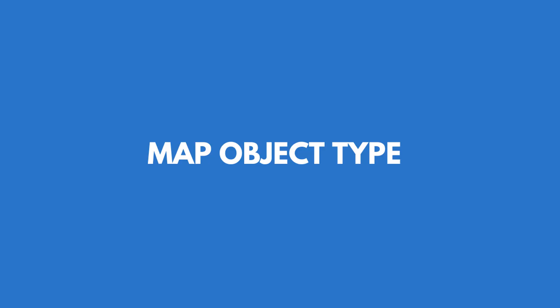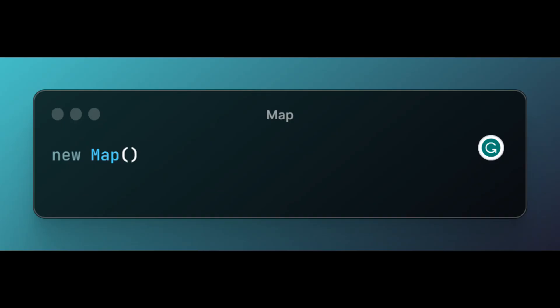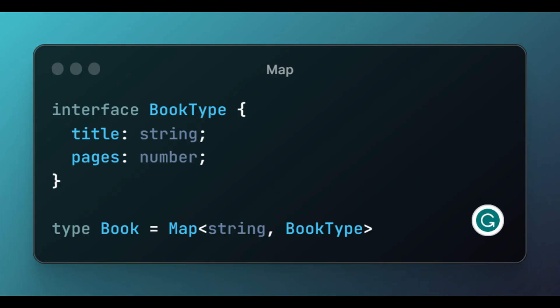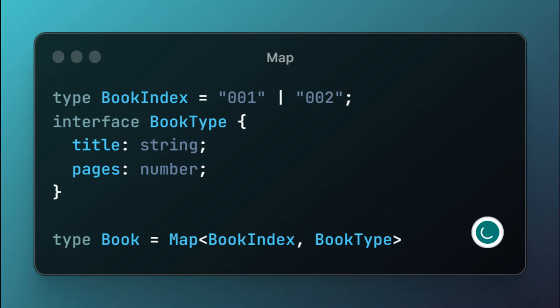Finally, let's look at how we can use the map object to create the dictionary type in TypeScript. The map object is a built-in JavaScript object that allows us to create the dictionary type. Let's see how we can recreate our book dictionary using a map object. To get strong typing for the keys on the map, we need to use the literal union type like we did in the record utility type.